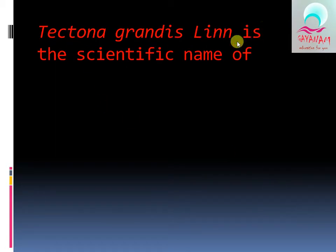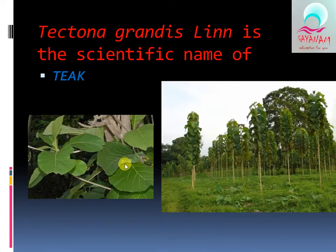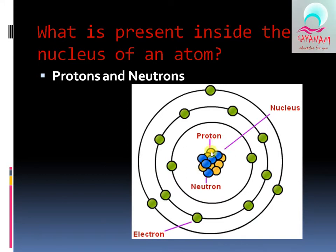The scientific name of tick is Ixodes. Inside the nucleus of an atom there is a proton or neutron. The nucleus contains protons and neutrons, while electrons orbit outside the nucleus.